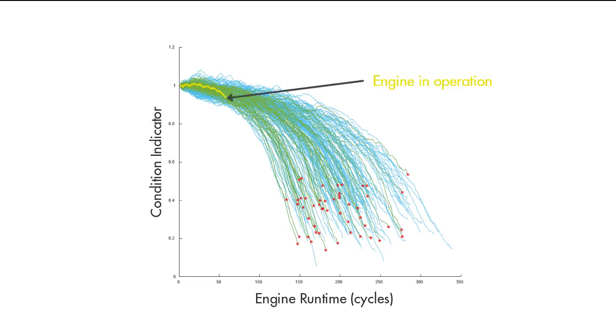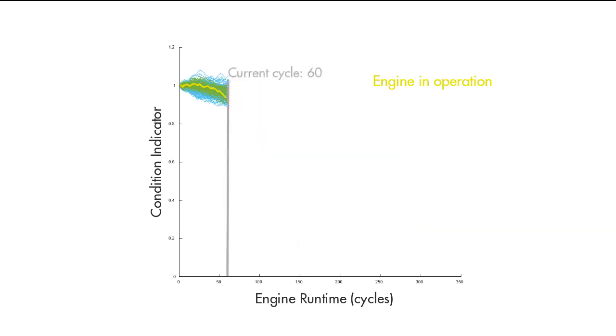The yellow profile represents our engine for which we want to estimate the remaining useful life. At the current time, the engine is at 60 cycles. The similarity model first finds the closest engine profiles to our engine up to the current cycle. Since our engine deteriorates similar to these engines, they can give us an idea about the expected failure time of our engine.